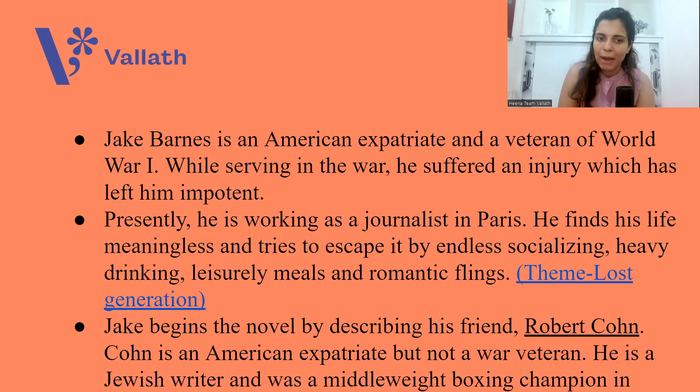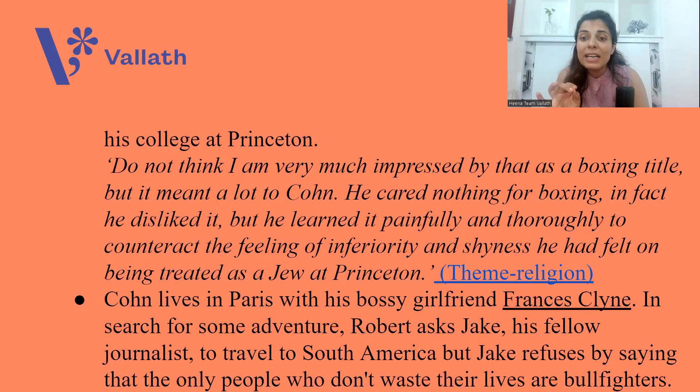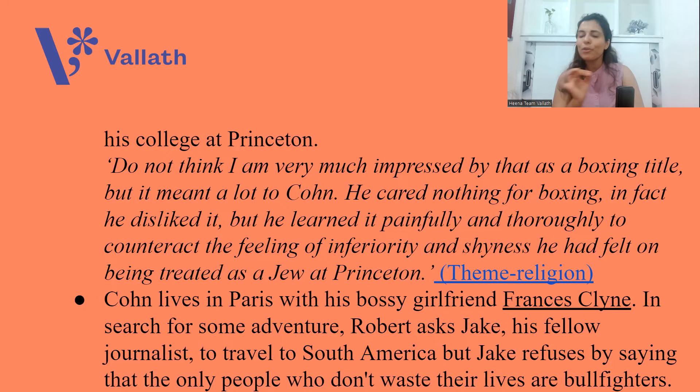Robert Cohn is from America, also living in Paris. He is Jewish — a Jewish writer — and he was a middleweight boxing champion in his college at Princeton. Jake says of him: 'Do not think I'm very much impressed by that as a boxing title, but it meant a lot to Cohn. He cared nothing for boxing; in fact, he disliked boxing, but he learned it painfully and thoroughly to counteract the feeling of inferiority and shyness he had felt on being treated as a Jew at Princeton.' Here the theme of religion can be discussed.